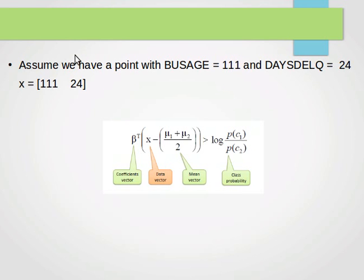Now let's assume that we have a new point with BUSAGE 111 and DAYSDELQ 24. This is what the vector looks like now, a new point with two values. And we want to check whether it belongs to the yes class or to the no class.